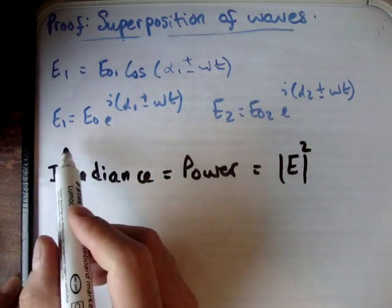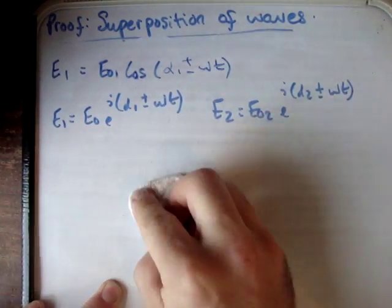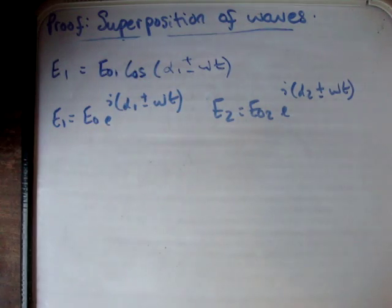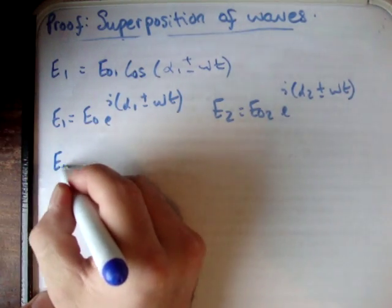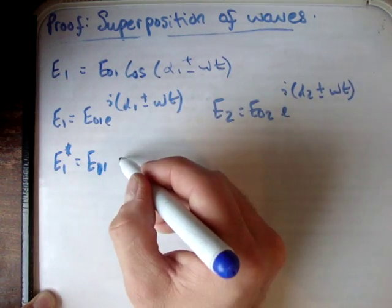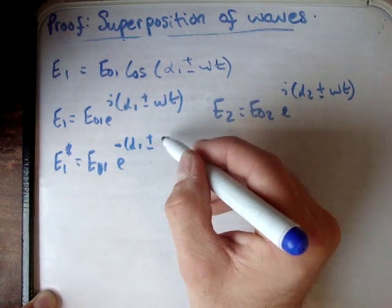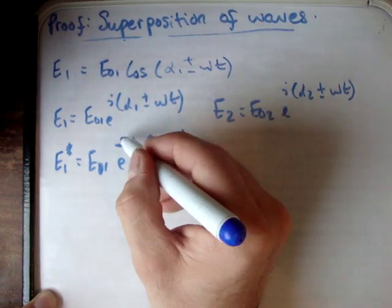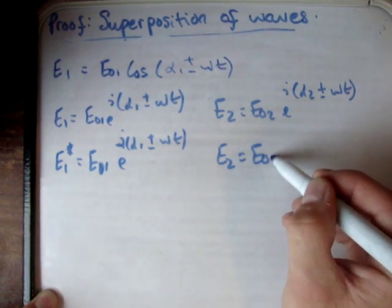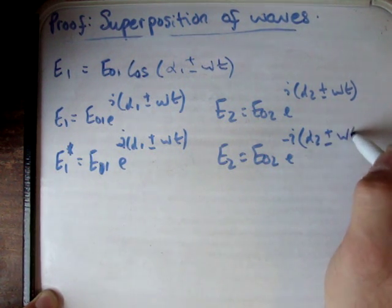To get the complex conjugate, you change the signs of all the imaginary parts. So E1 star — where star means complex conjugate — is equal to E01 times e^(-i(α1 ± ωt)). And E2 star is equal to E02 times e^(-i(α2 ± ωt)).